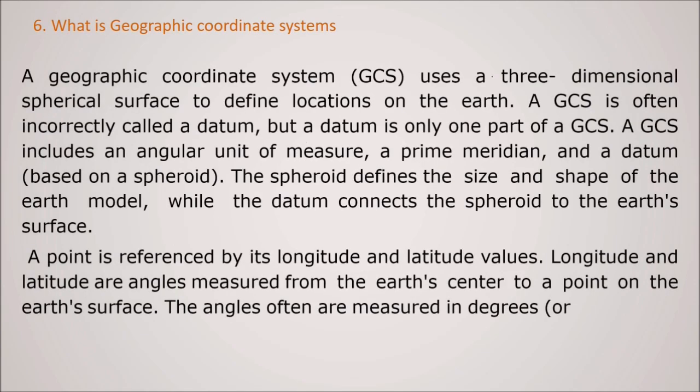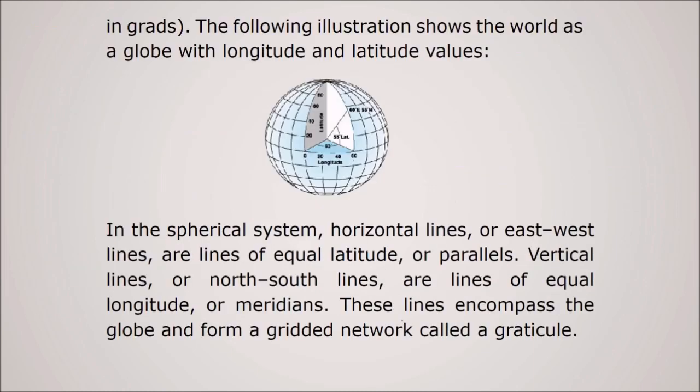What is geographic coordinate system GCS? A GCS uses a 3D spherical surface to define the location on the earth. A GCS is often incorrectly called as sometimes datum, but datum is only a part of GCS. So GCS include an angular unit of major prime meridian and a datum which is based on the spheroid. The spheroid defines the size and shape of the earth model while the datum connects the spheroid to the earth's surface. So the point is referenced by the latitude and the longitude values. The latitude and longitude are actually the angles which are measured from the earth's center to a point on the earth's surface. The angles often are measured in degrees or in gradients.